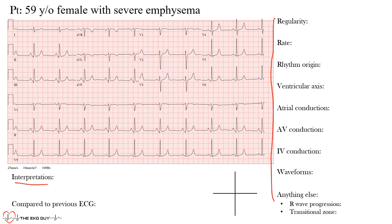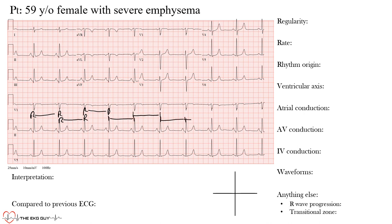When you're ready, start the video and we'll go through this together. So here we have a 59-year-old female with severe emphysema. The first thing we want to do is look at the regularity of the rhythm. From first impression, you probably notice that this is a regular rhythm. When we look at regularity, we can use any interval, but it's always good to be consistent, so we'll use these big R waves — the R-to-R interval.